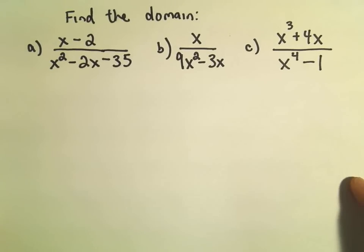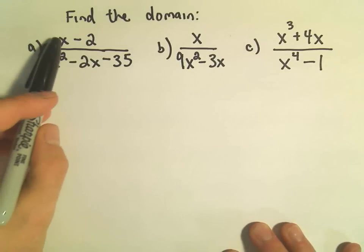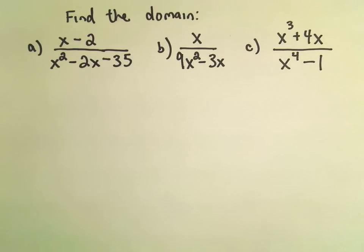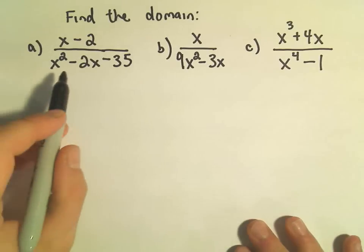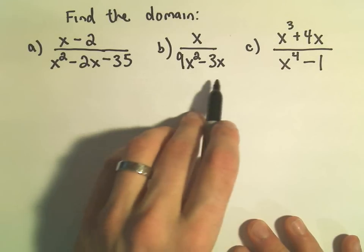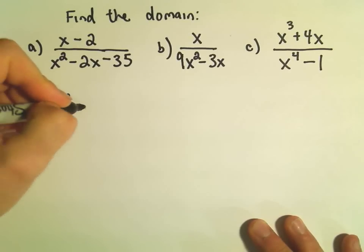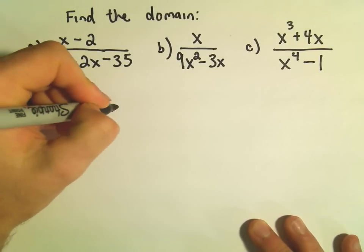So, a rational expression is just a polynomial divided by a polynomial, so here I have three examples, and what I'm going to do is just look at the denominator of each one, set it equal to zero. The solutions to that equation will be the values of x that I have to exclude.